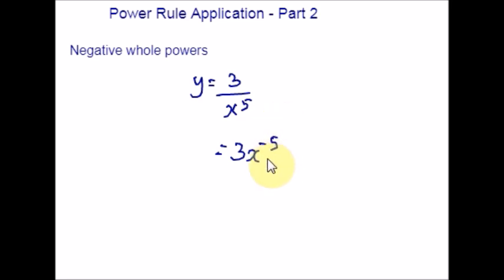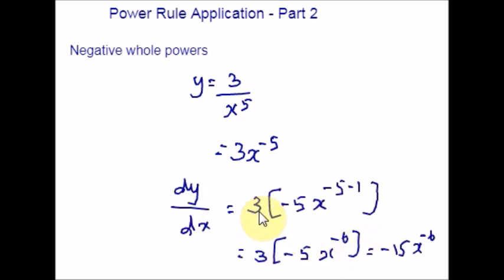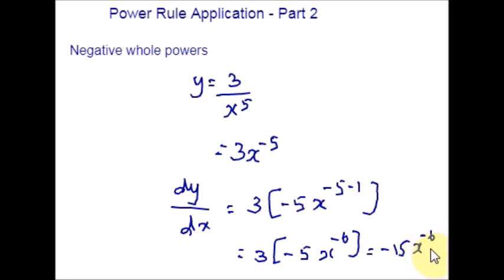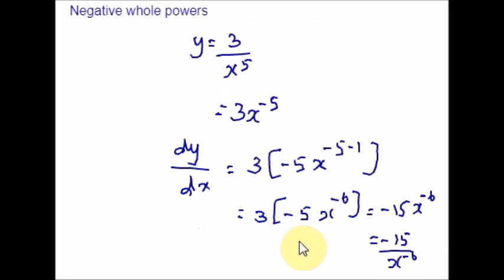Using these values in the second part of the power rule, you keep the coefficient as it is and bring the exponent down. Negative 5 × 3 = −15, and the new exponent is −5 − 1 = −6, giving −15x⁻⁶. Make sure you do not leave a negative exponent in your final answer. Apply the law of indices again — shift the term to the denominator — to get −15/x⁶. Whenever you get a negative whole power of x, your answer will look like a reciprocal.